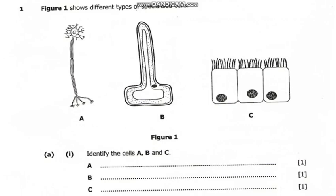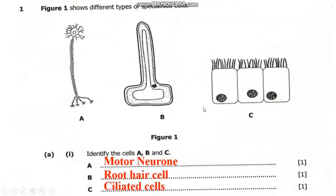Here is question 1. The question reads: figure 1 shows different types of specialized cells — cell A, cell B, and cell C. Identify the cells A, B, and C. When you look at cell A, you can see that this cell has got the long axon and the dendrites are many, so this cell is the motor neuron. Cell B has an elongated outgrowth, so this is the root cell. Cell C has got the cilia on top, so these are the ciliated cells. So cell A is the motor neuron, cell B is the root cell, and cell C is the ciliated cells.